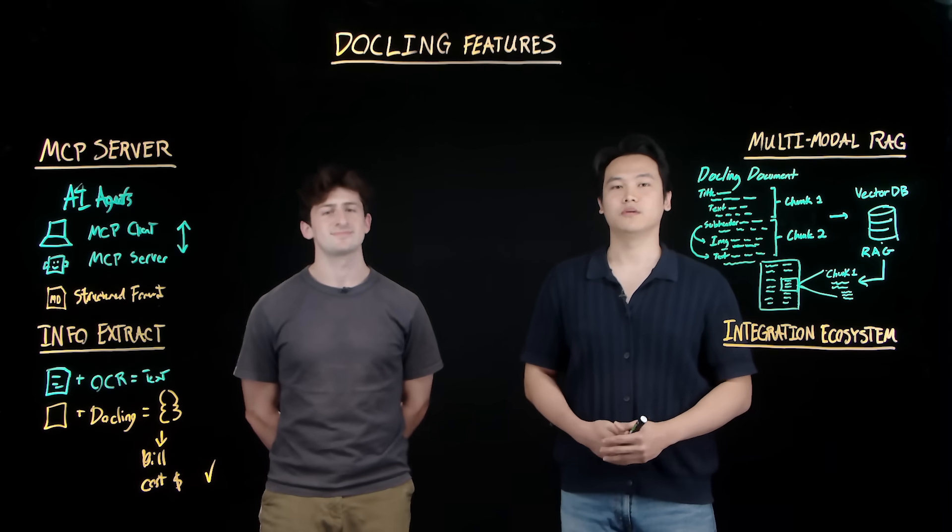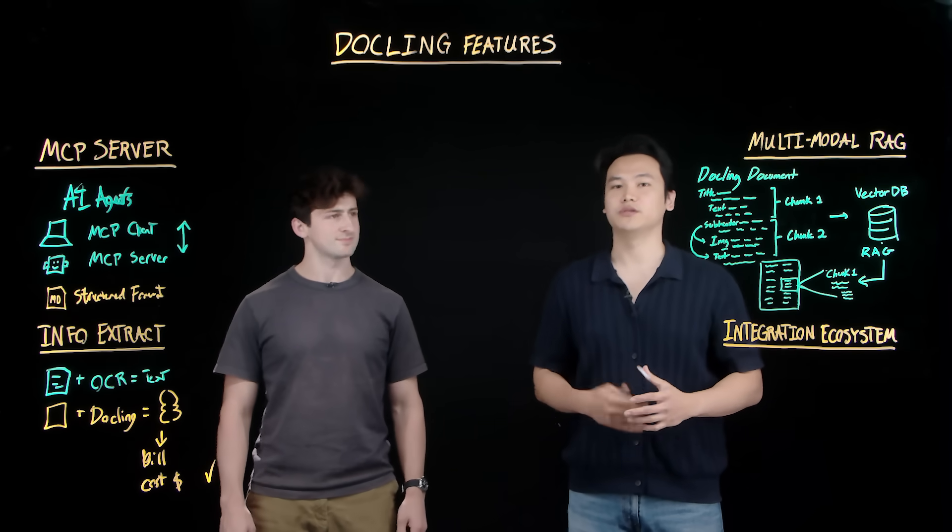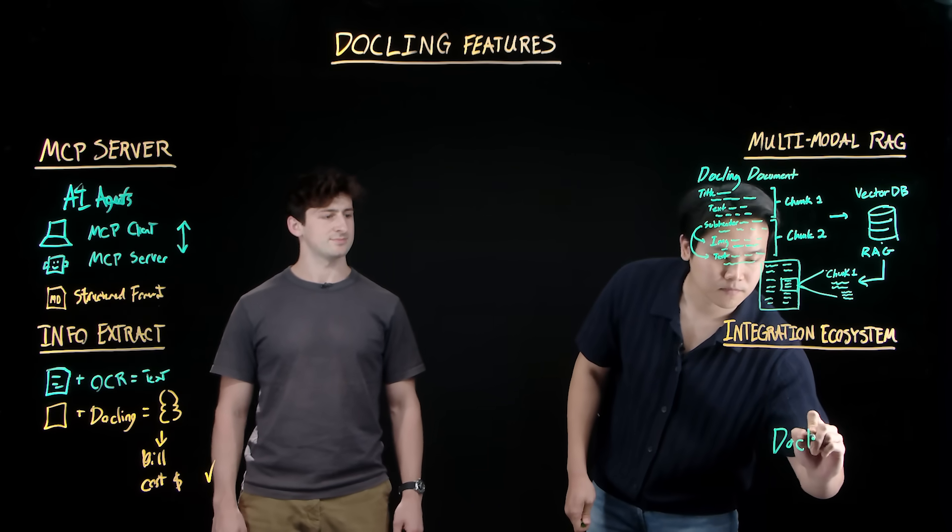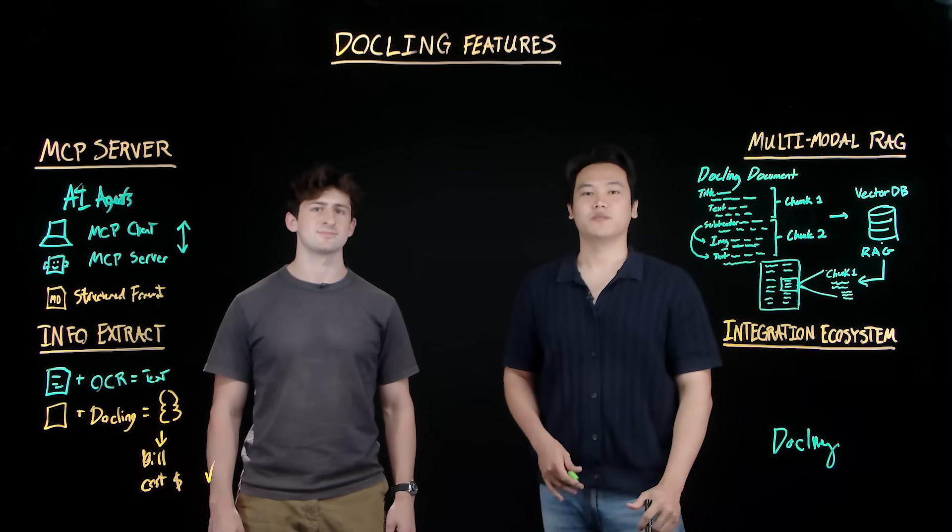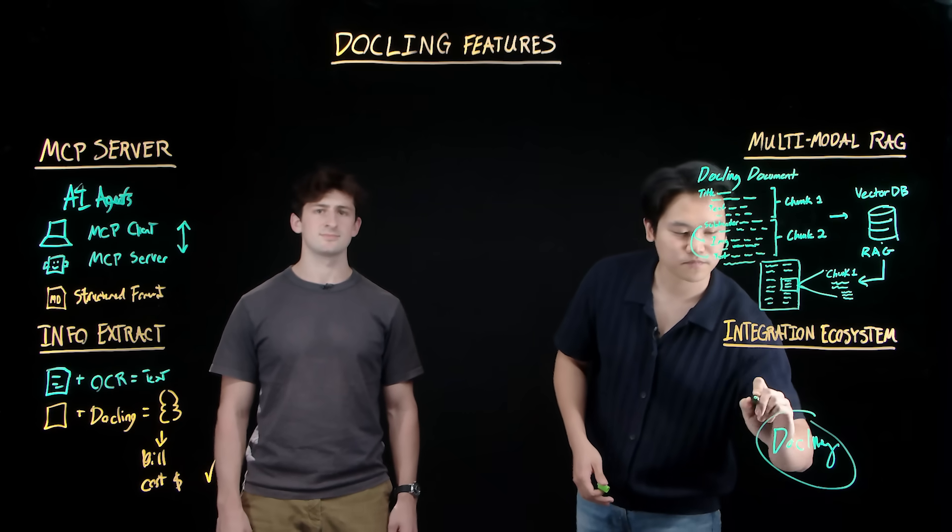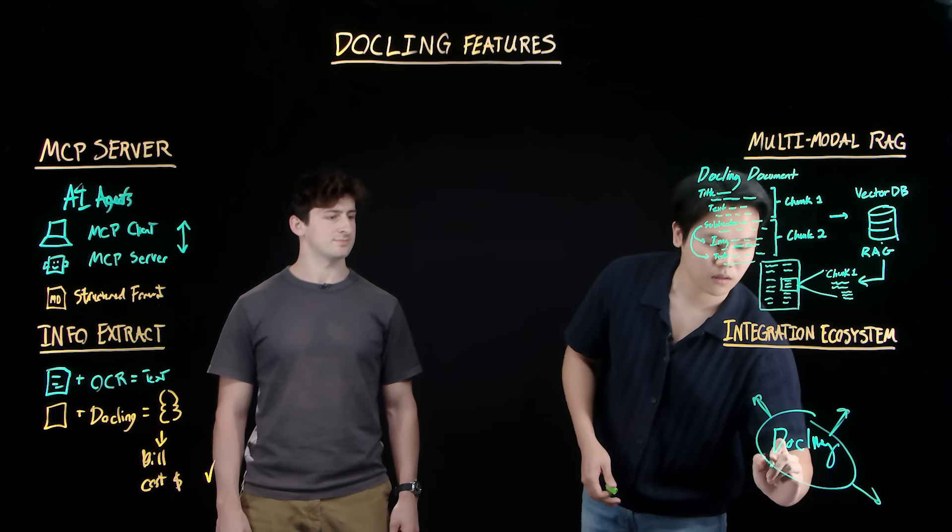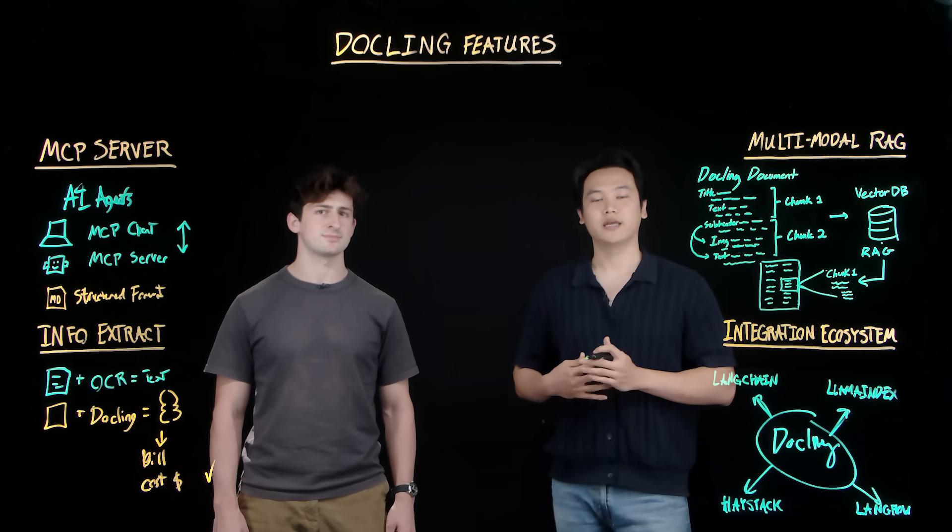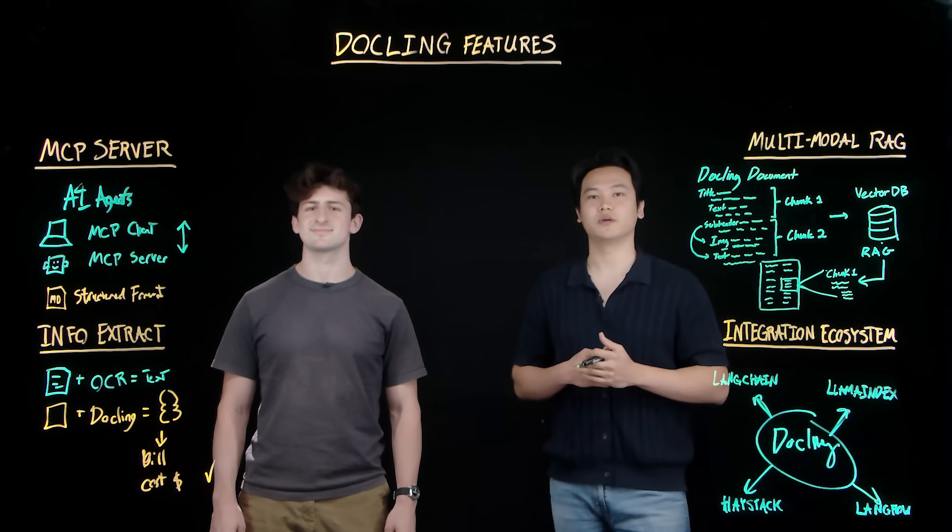Dockling doesn't live alone. It plugs into the tools you already use, so the same documents flow straight into your RAG stacks. At the center is Dockling. Dockling outputs drop into the major RAG frameworks, including LangChain, LlamaIndex, Haystack, and LangFlow, so documents become chunks and markdown ready for retrieval and prompting.